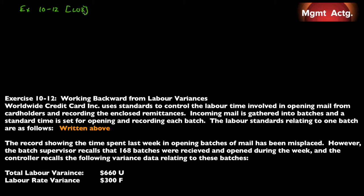There is exercise 10-11. Now let's look at exercise 10-12, and I particularly like this one for students because you have to look at the problem from a different angle. That's how we develop expertise — you're an expert when you can look at a problem from multiple perspectives and still see the solution. The topic is: working backwards from labor variances. Worldwide Credit Card uses standards to control labor time involved in opening mail from cardholders and recording enclosed remittances.